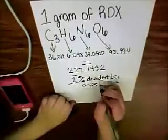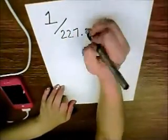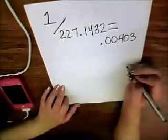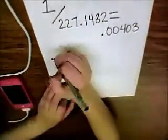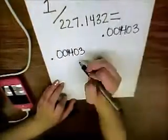What we're going to do is we're going to take that number and divide 1 by 227.1432, and then we'll get the exact ratio that it is. Which turns out, the number we need is 0.004403.